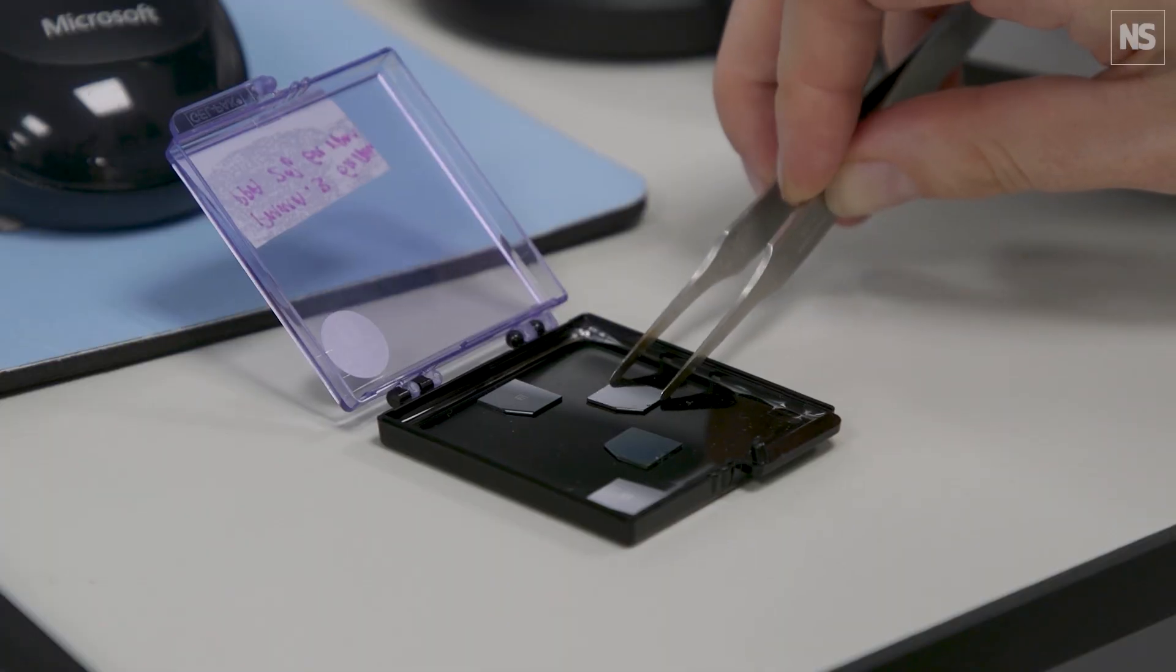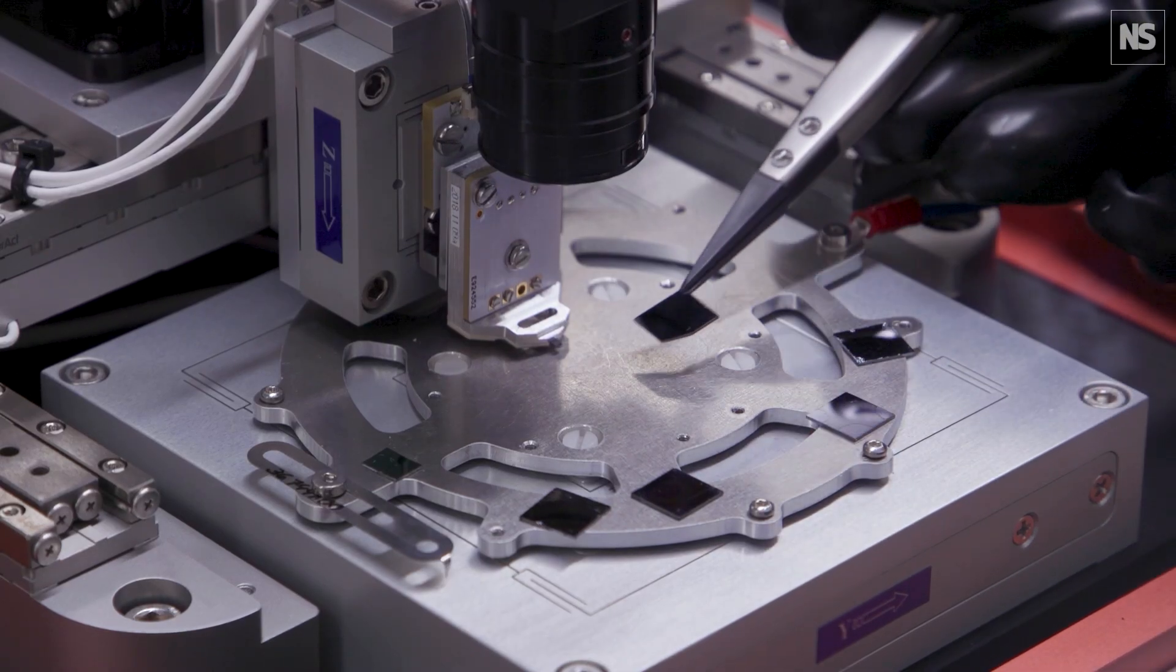To create the world's smallest violin, we have a multi-step process. We start with our clean chip and put it into the glove box where we coat it with a very thin layer of polymer.